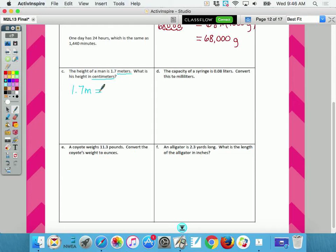What is one unit? One meter. 1.7 times one meter equals. 1.7 times how many centimeters in a meter? No, that's feet and yards. This is the metric system. So it's either going to be a hundred or a thousand. One hundred centimeters.